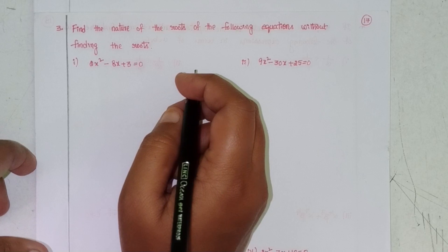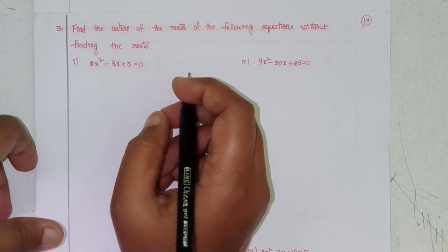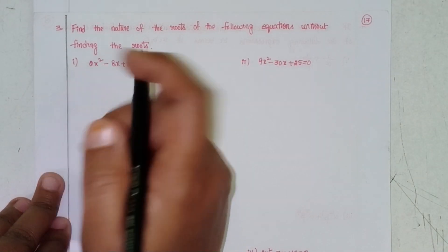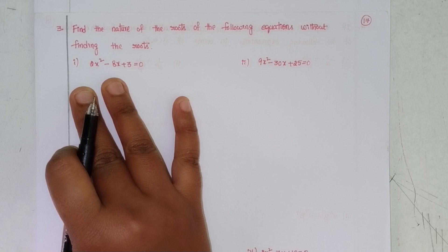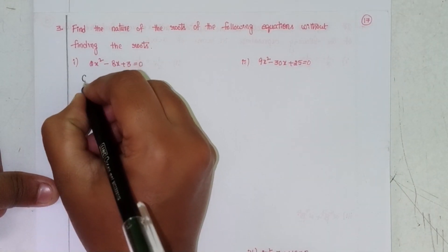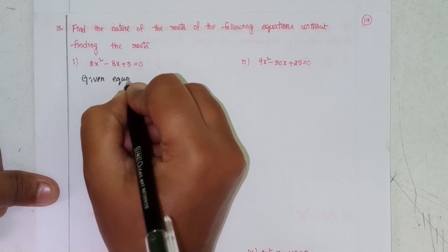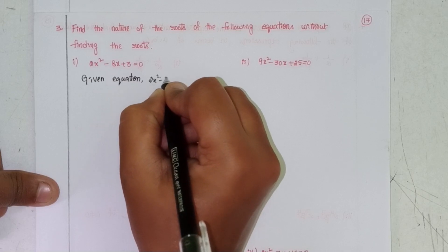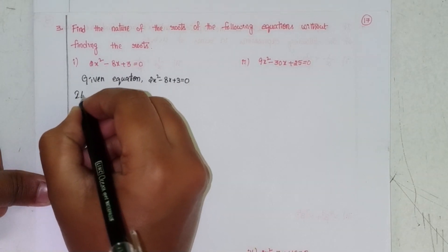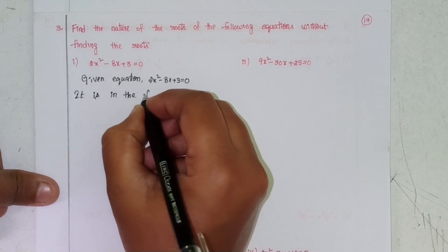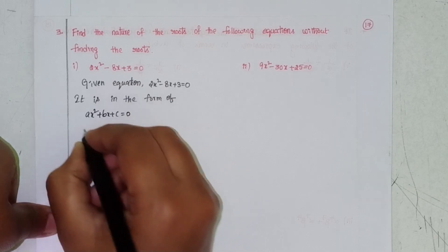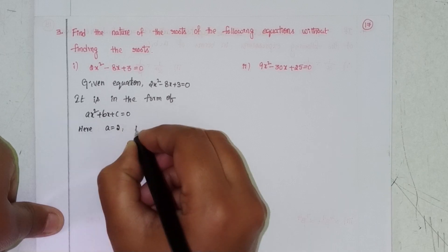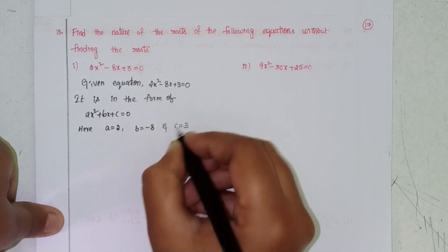Welcome back to our channel. Today we will discuss Intermediate Secondary 2A, Chapter 3, Quadratic Expressions, Exercise 3A — finding the nature of the roots of the following equations without finding the roots, using the discriminant. Given equation: 2x² - 8x + 3 = 0. It is in the form of ax² + bx + c = 0, where a = 2, b = -8, and c = 3.